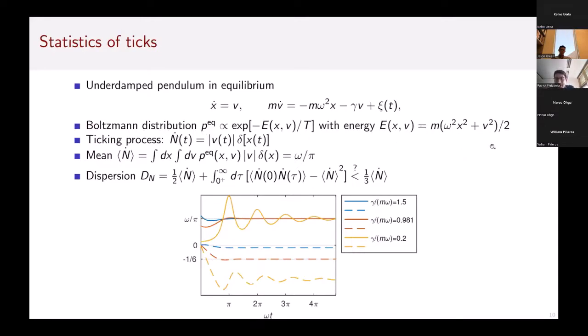With that quadratic energy function, I can define my ticking process, which is just the sequence of jumps whenever I pass through zero. I realize that by having this delta function that acts on x(t). Integrating that would give me the number of ticks up to some point in time t. I can fairly easily get the mean ticking rate, which is just an average using that Boltzmann distribution. In the end it's just ω/π.